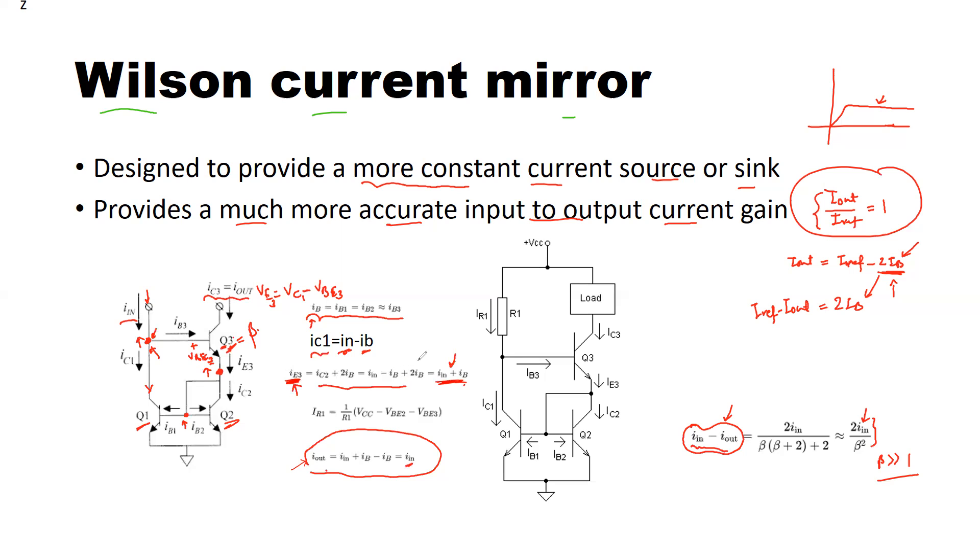So that's how the Wilson current mirror works. Detailed explanation of how we derived these equations are given in our previous module, so please refer to that. Then this was the circuit about how, after making sure that the output current equals the input current, we connected the resistor. By the resistor, we will generate the input current into the circuit, and after matching I_C3 to the input current I_R1, we will connect the load so that transistor Q3 will act as a current source.